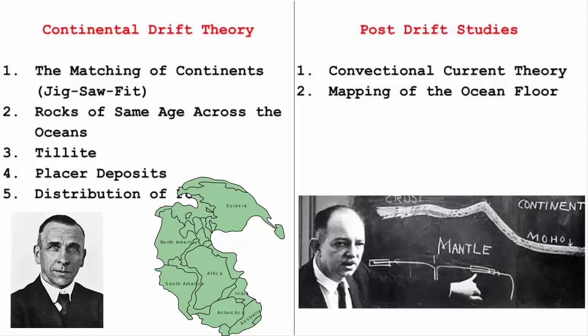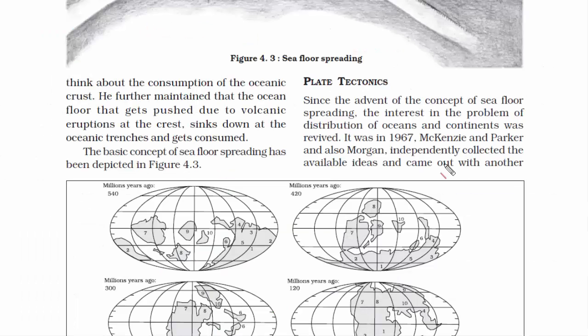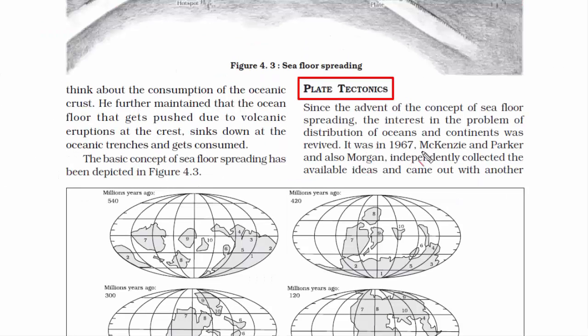We are not done yet — there is a third concept which brings us to the topic of plate tectonics. This is the third concept that tries to answer questions related to the distribution of oceans and continents. The concept of plate tectonics was presented by Mackenzie, Parker, and Morgan — three people — in 1967, just six years after Hess's sea floor spreading theory.